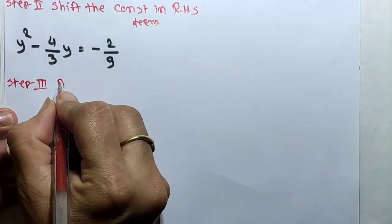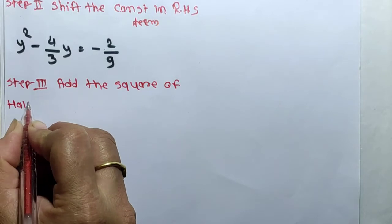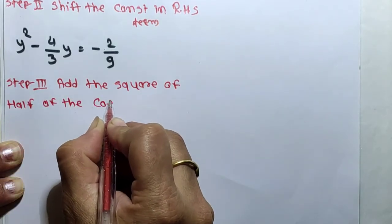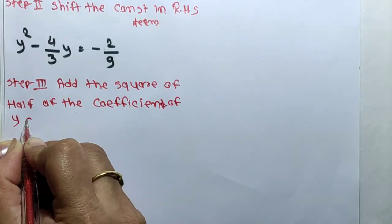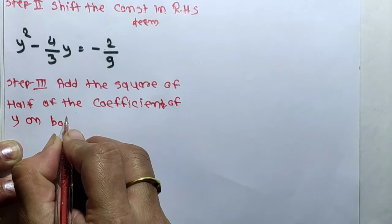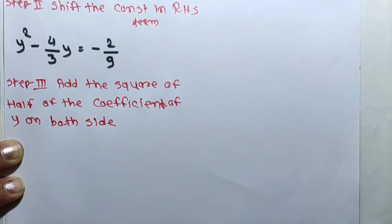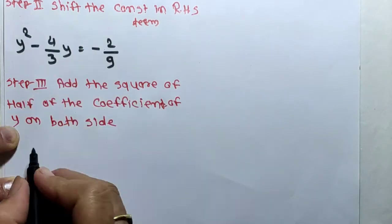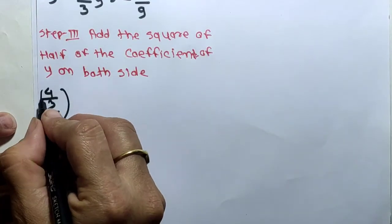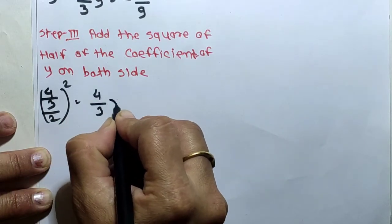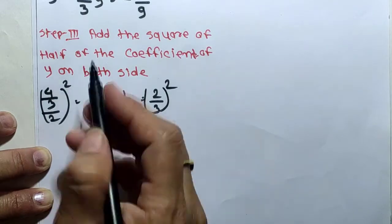In step 3, we add the square of half of the coefficient of y on both sides. The coefficient of y here is 4/3. We divide it by 2: 4/3 × 1/2 = 2/3. Then we square it to get (2/3)². This term is added on both sides.